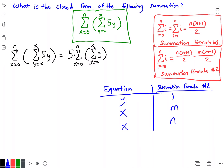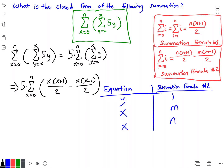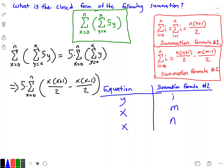Now we can use this to rewrite our summation in the form from formula number two. So this equals 5 times the summation from X equals zero to N of: X times (X plus one) divided by two, minus X times (X minus one) divided by two. I got that by plugging the matched values into our formula.